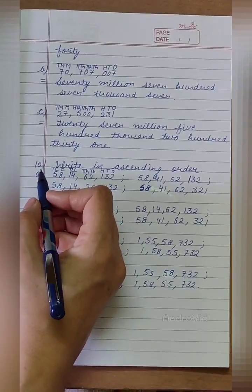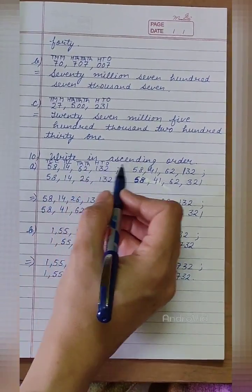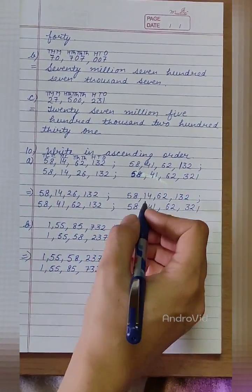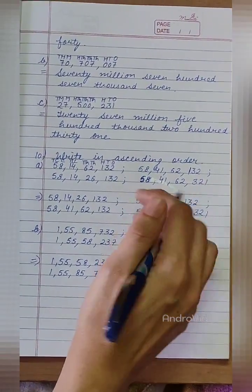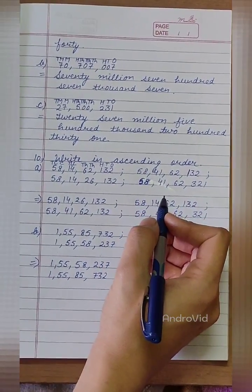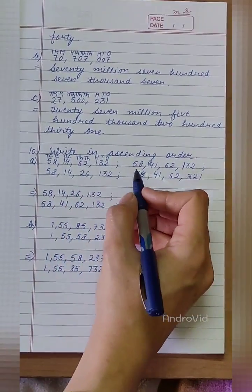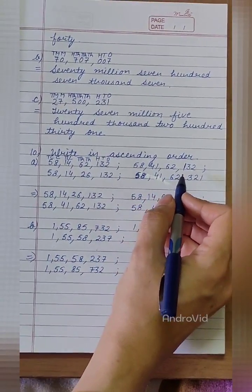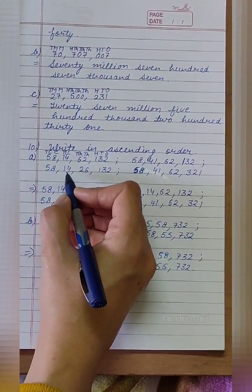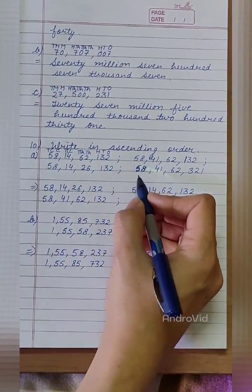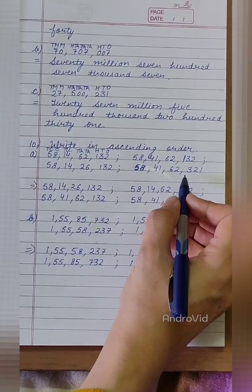Next question is 10th, that is write in ascending order. Ascending order means arrangement of numbers from the smallest to the greatest. Part A is 5814-62132, 5841-62132, 5814-26132, 5841-62321.